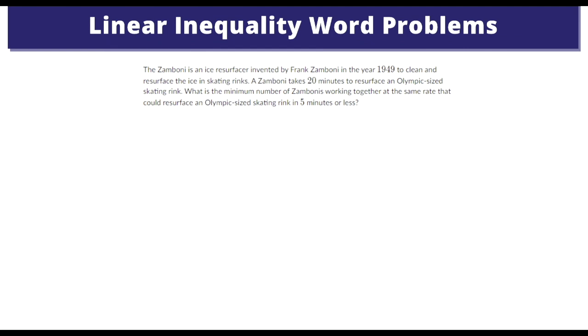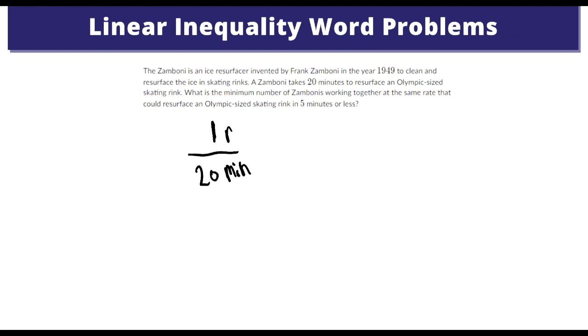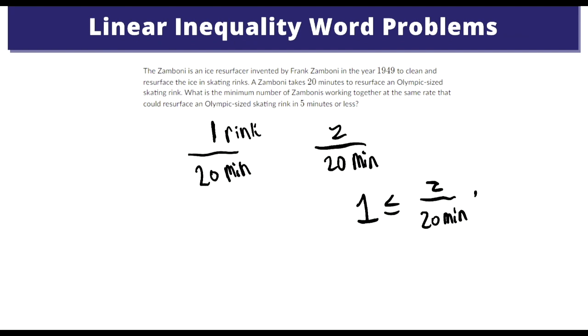So we know one Zamboni takes 20 minutes for one rink. Using the same logic, if one Zamboni takes 20 minutes, we could say Z Zambonis — the more we add, the more speed we get. We want it to be five minutes or less. We want to finish only one rink, and it has to be less than or equal to one. So we can write Z over 20 minutes multiplied by 5 minutes, which simplifies to 5Z over 20, or Z over 4.